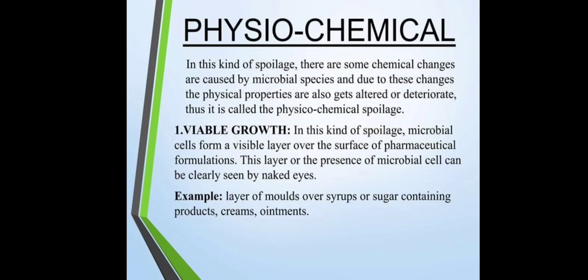In physiochemical spoilage, there are some chemical changes caused by microbial species, and due to these changes, the physical properties are also altered. Thus it is called physiochemical spoilage. First is visible growth: microbial cells form a visible layer over the surface of pharmaceutical formulation. This layer can be clearly seen by naked eyes. For example, a layer of molds over syrups or sugar-containing products, creams, and ointments.